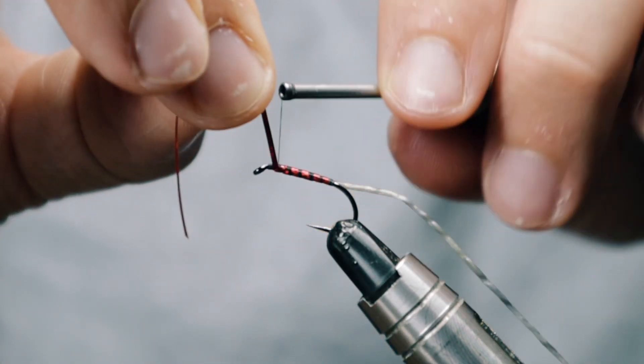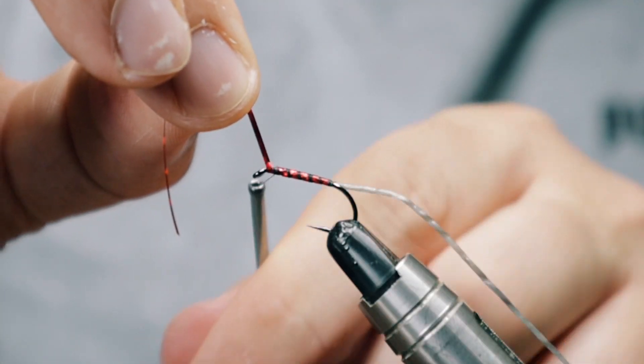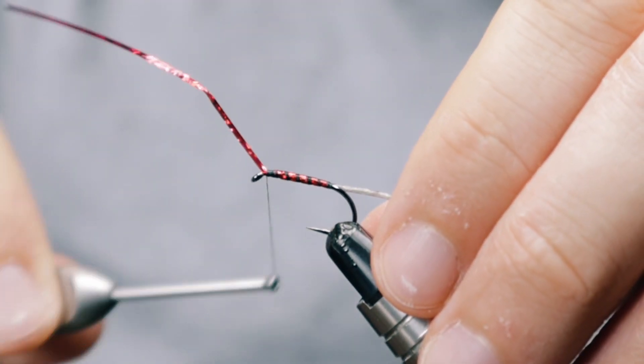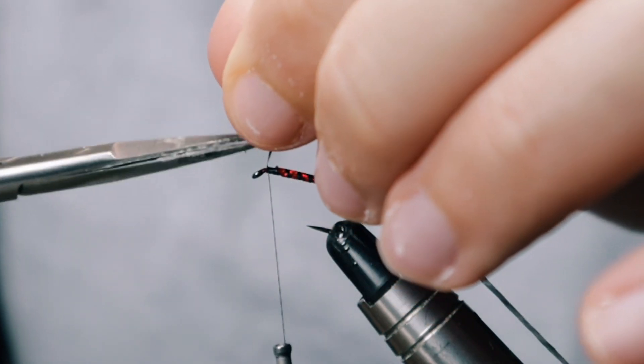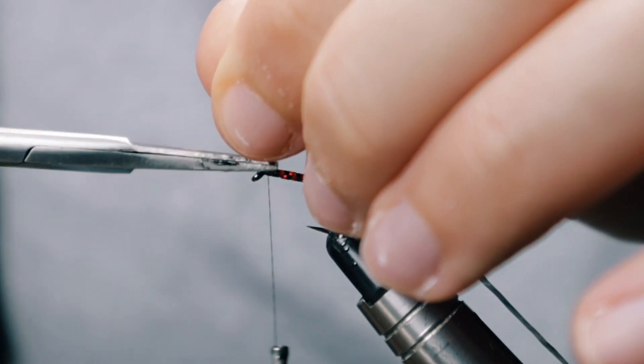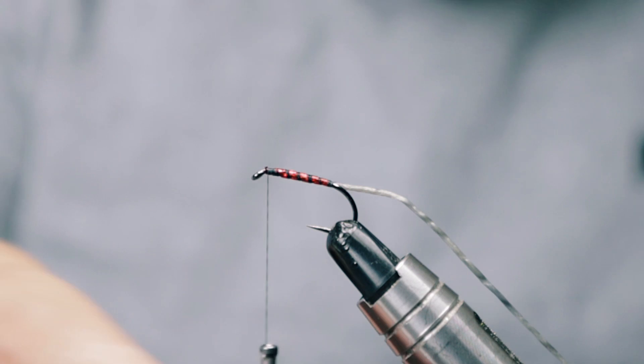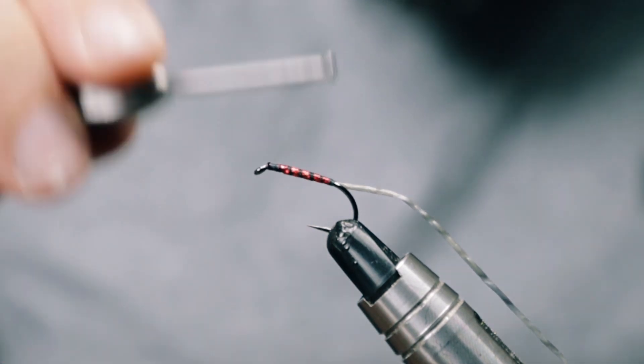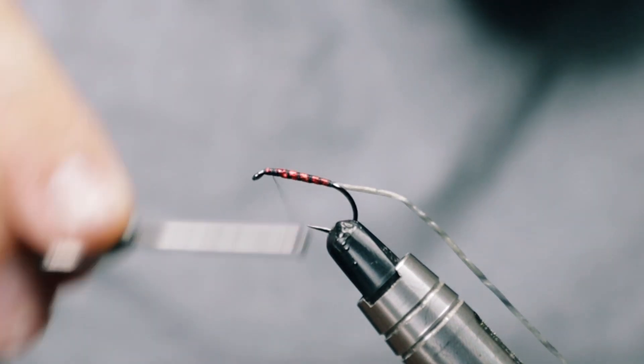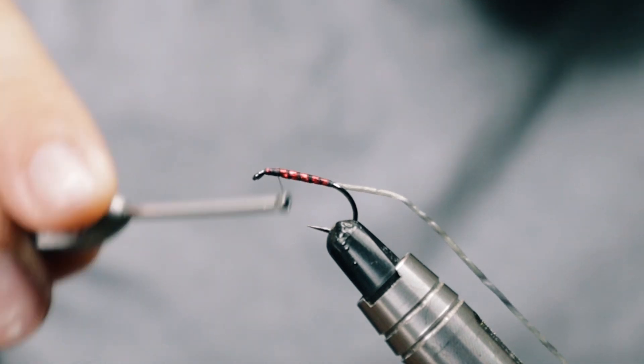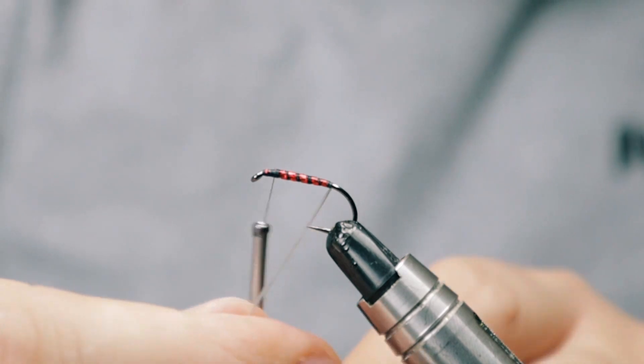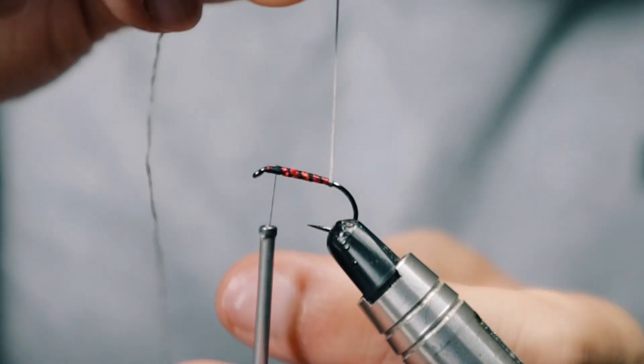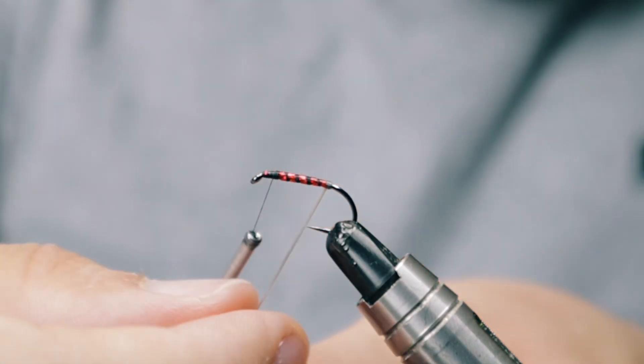And again, space into these turns, all that sort of good stuff. Personal preference - I'm just going to wind this up into the head area and chop away. And come back down to where I'm roughly going to start my head.